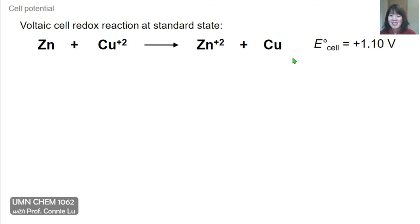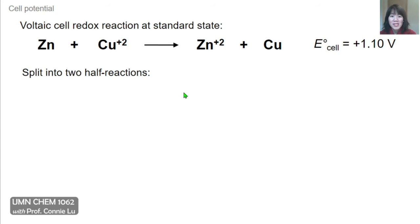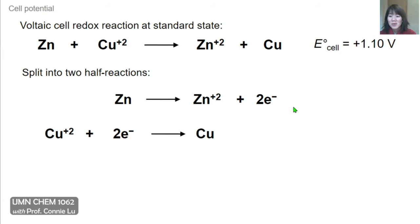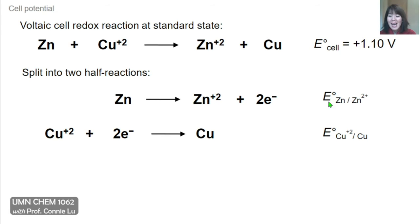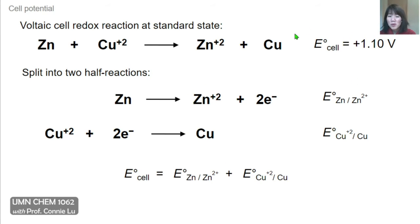This is the overall redox reaction that occurs in the zinc-copper voltaic cell, and if done at the standard state, we would measure a standard cell potential of +1.1 volts. In the next slides, I'll introduce the concept of a half cell potential, because we can split all redox reactions into their half reactions: zinc being oxidized to Zn²⁺, and Cu²⁺ being reduced to copper metal. For each half reaction we define a half cell potential, and because the redox reaction is a sum of these two half reactions, the full cell potential is also a sum of these half cell potentials.